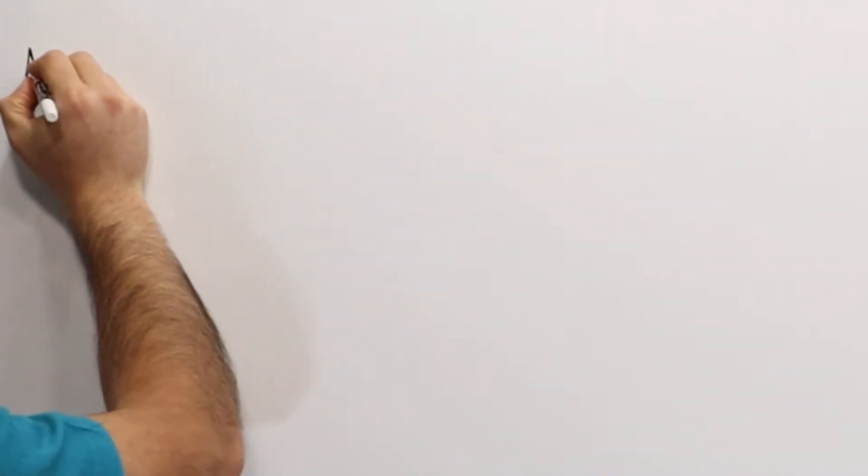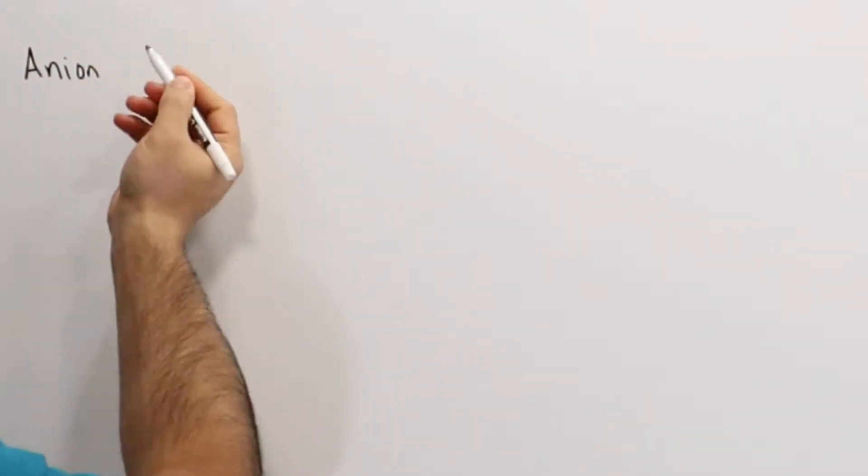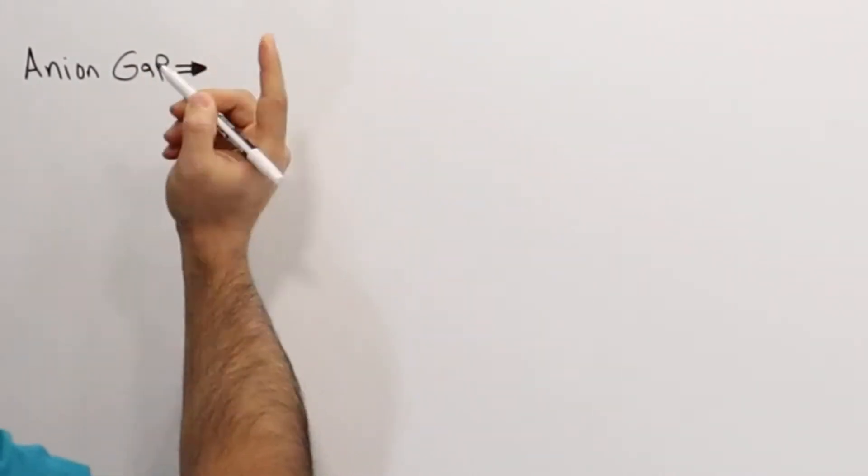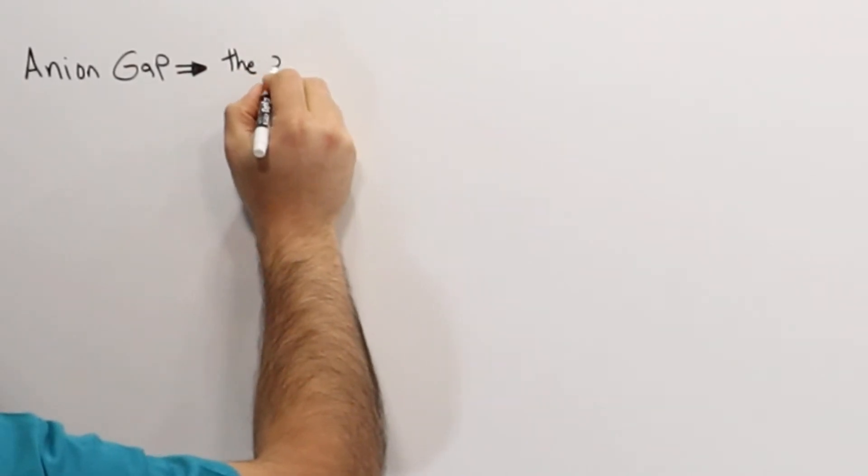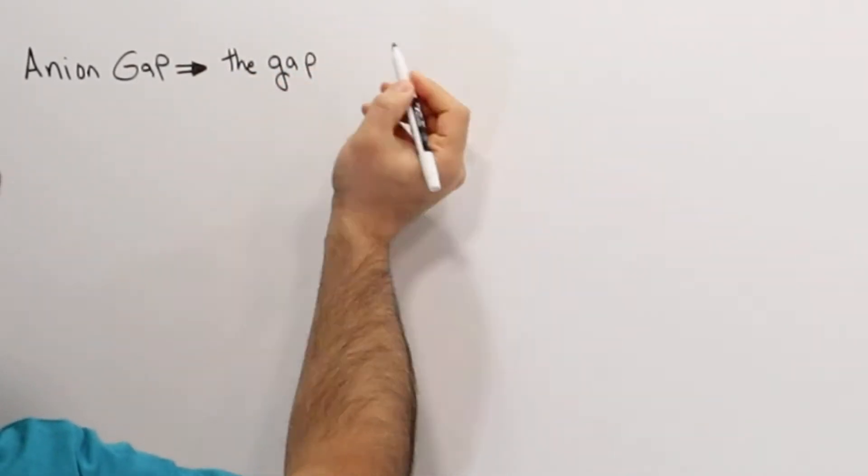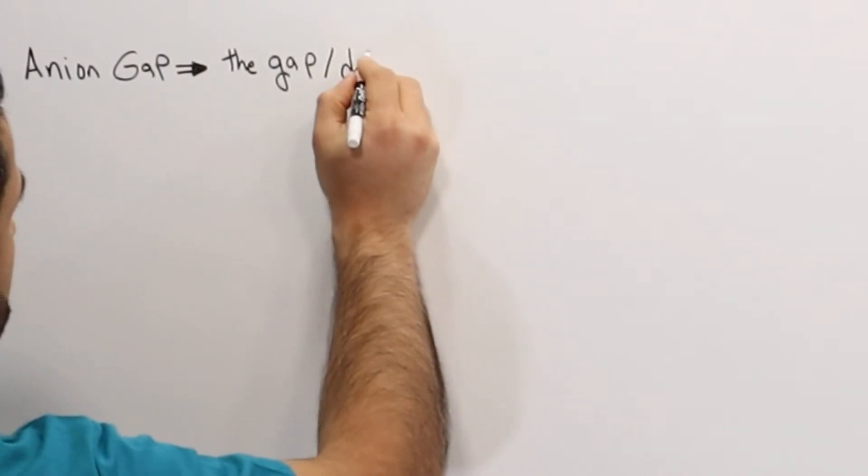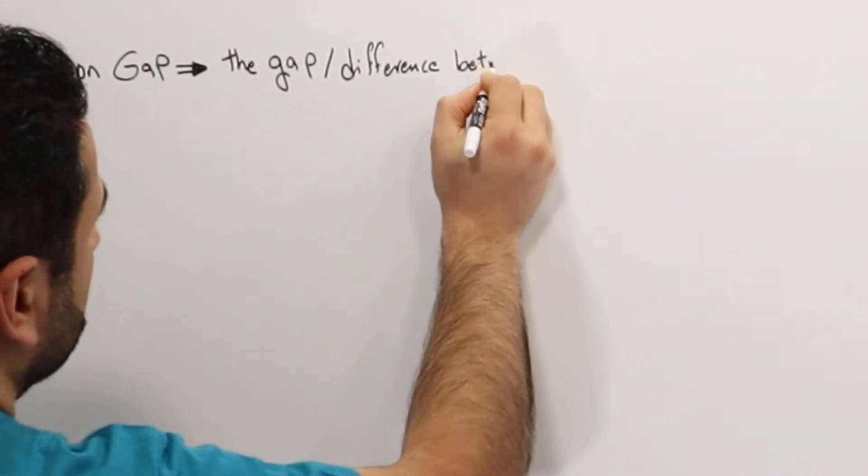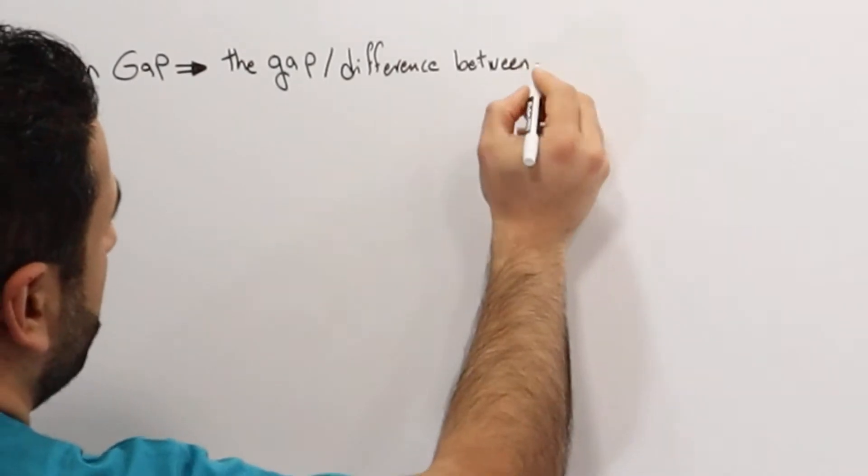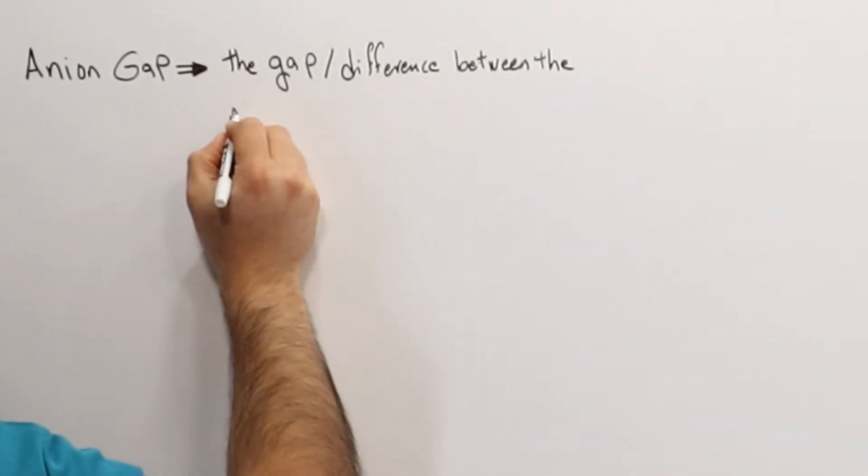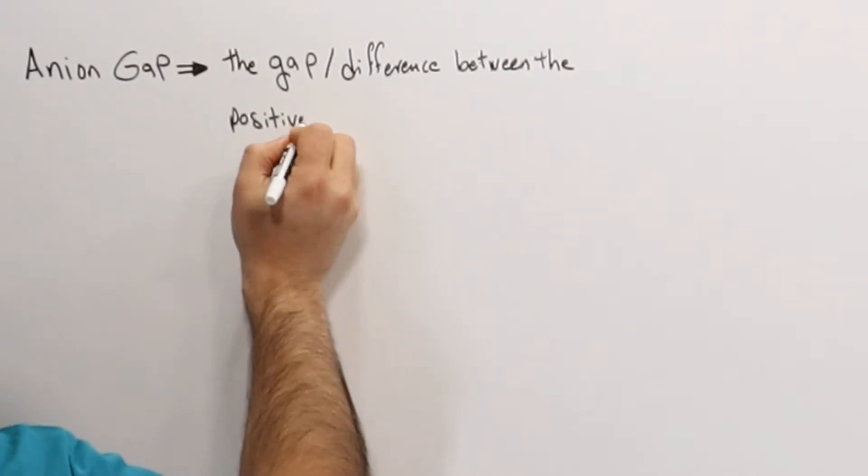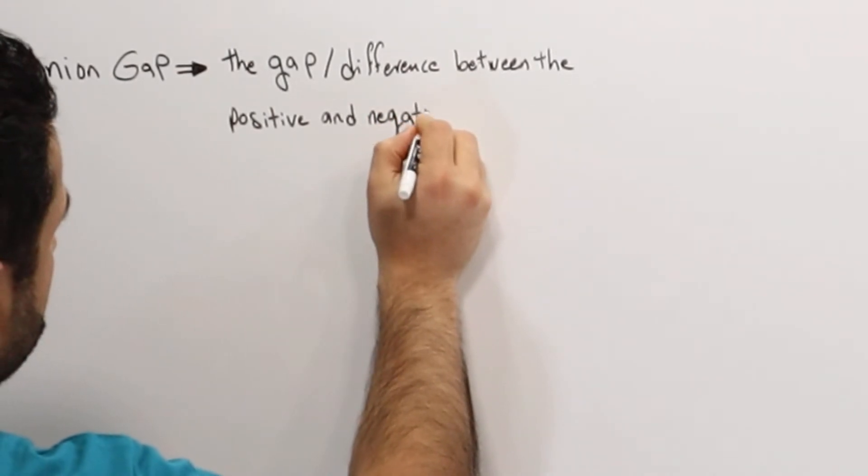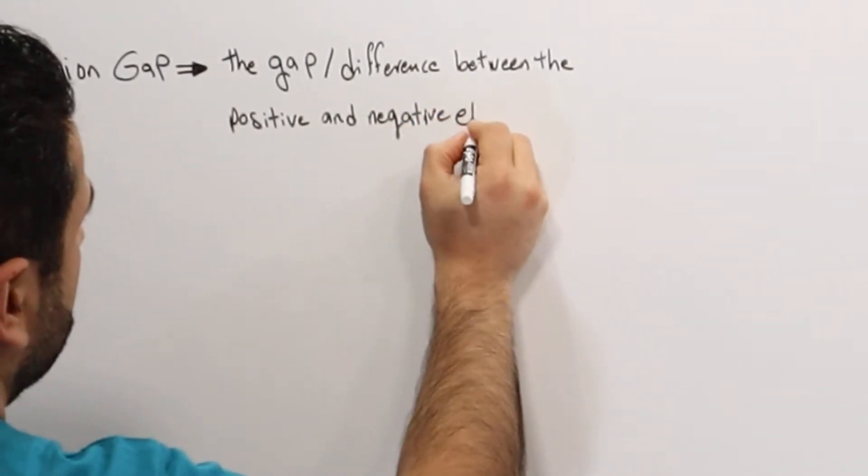So anion gap, just from the name, it's basically the gap or the difference between the positive and negative electrolytes in the blood.